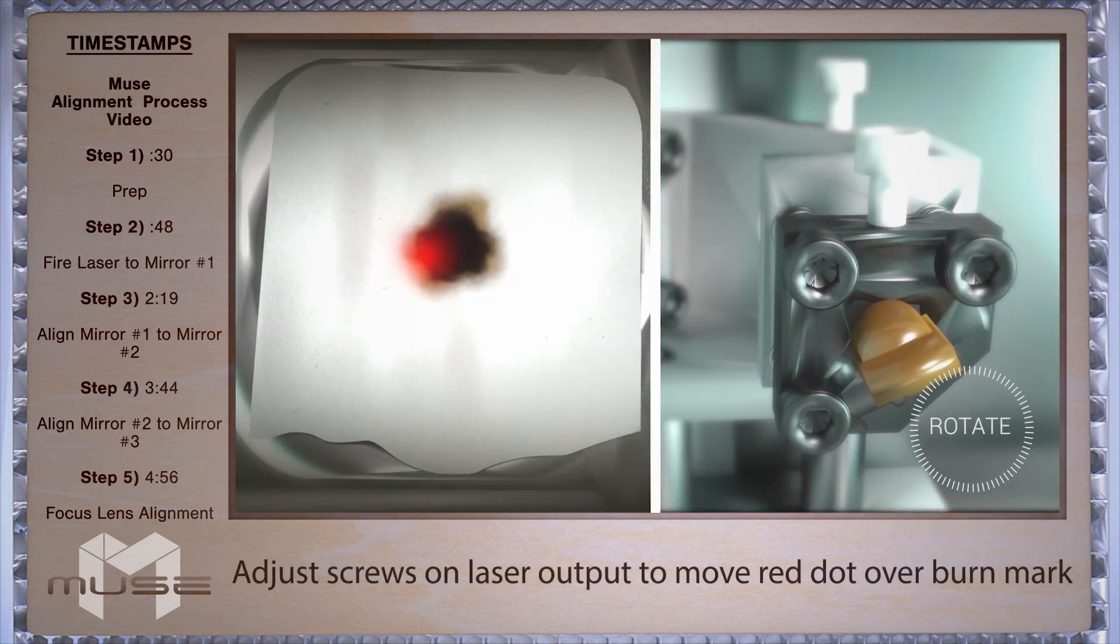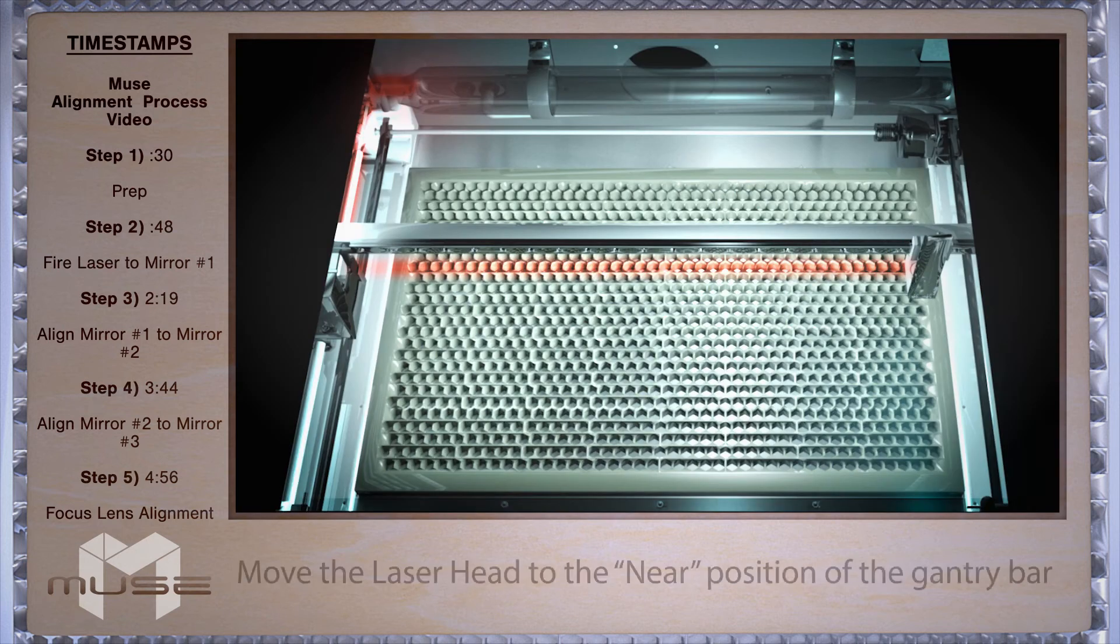Carefully adjust the red dot diode again on top of the burn mark. And now we reposition for the close test fire.